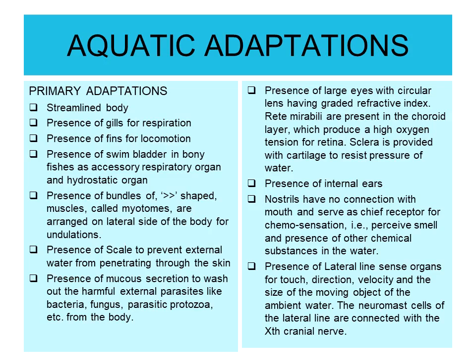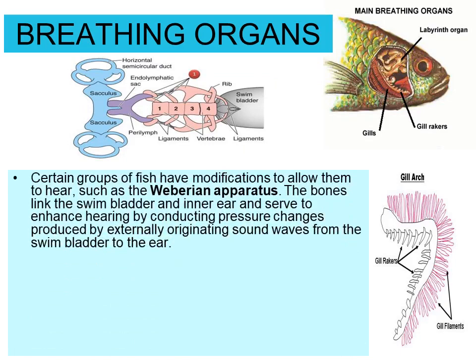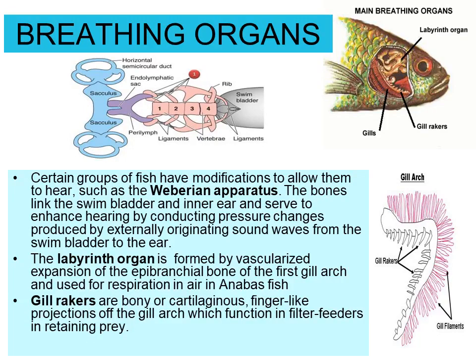The neuromast cells of the lateral line are connected with the trigeminal nerve. Certain groups of fishes have modifications to allow them to hear better, such as the Weberian apparatus — bones that link the swim bladder and internal ear and serve to enhance hearing by conducting pressure changes produced by externally originating sound waves from the swim bladder to the ear. The labyrinth organ is formed by vascularized expansion of the epibranchial bone of the first gill arch and is used for respiration, as in the anabas fish.